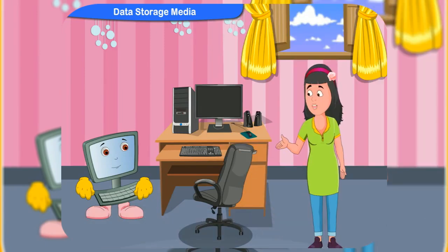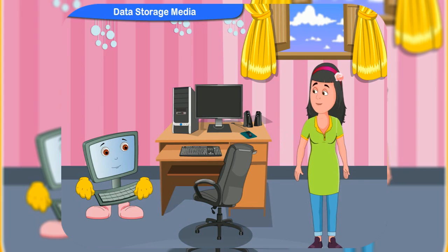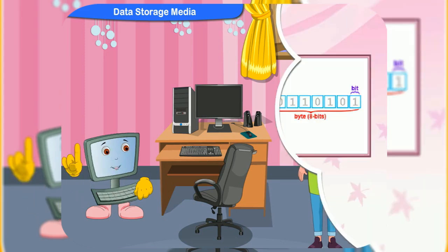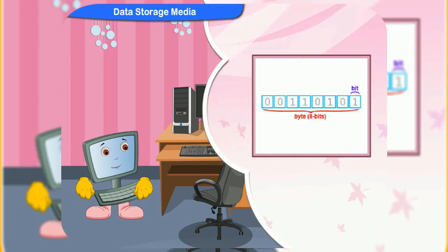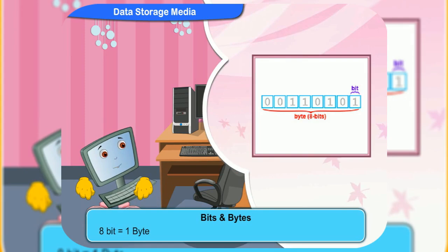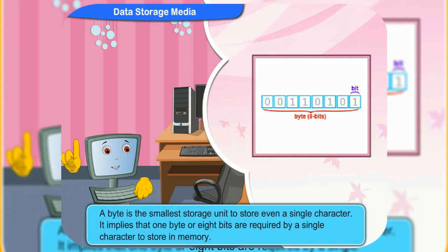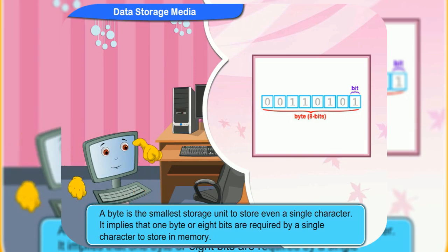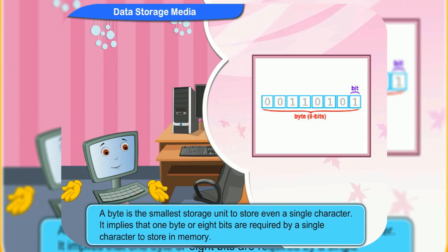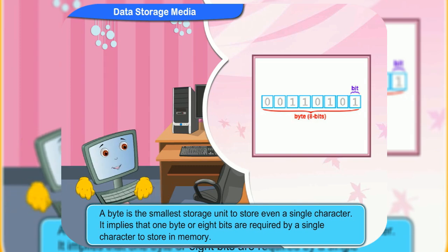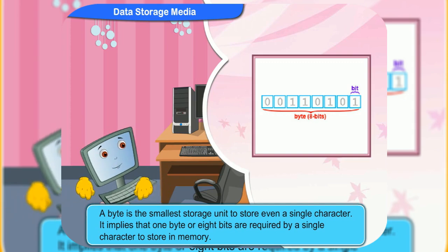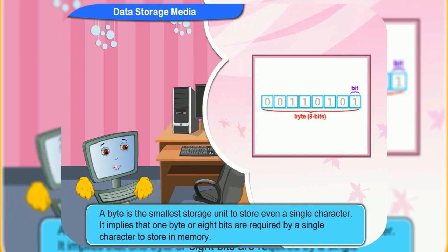What is the difference between bits and bytes? Bytes are bigger than bits. 8 bits make 1 byte. A byte is the smallest storage unit to store even a single character. It implies that 1 byte or 8 bits are required by a single character to store in memory.